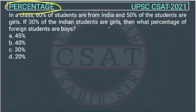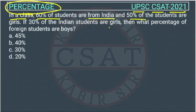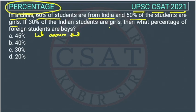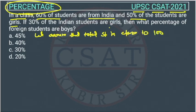This is a percentage question asked by UPSC in CSET paper of 2021. In a class, 60% of the students are from India and 50% of the students are girls. Whenever we do a percentage question, it's easy to consider the figure as 100. So let's assume that the total number of students in the class is 100.